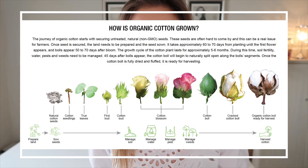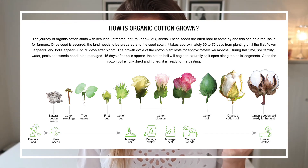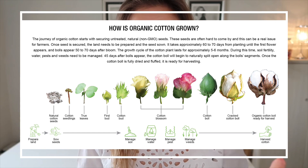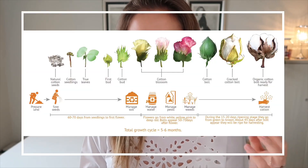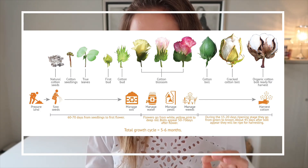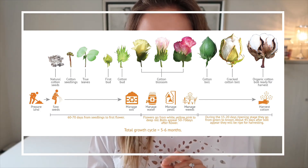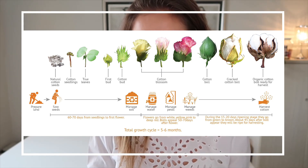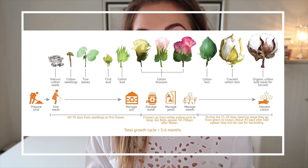In order to get cotton as a fabric we first need to grow the cotton plant up to the point where we have an organic or normal cotton ball, and that then goes through a further process where they clean and comb the cotton and weave it into a fabric. If we look at the farming of cotton, we start out with a natural cotton seed which becomes a seedling, leaves, a bud, and then a cotton bud. This takes about 60 to 70 days from planting until the first flower appears. A cotton ball only appears 50 to 70 days after bloom.